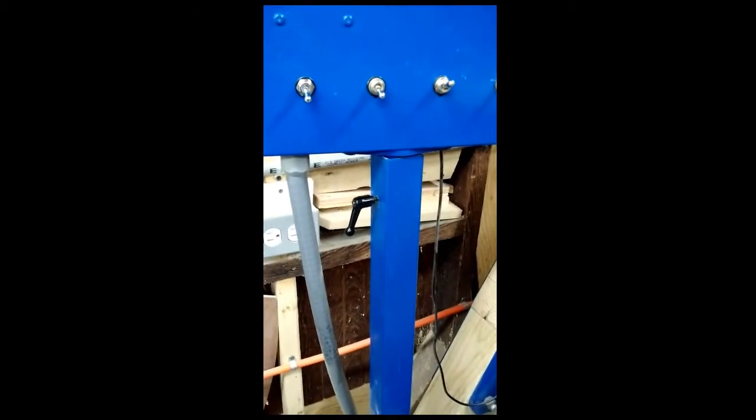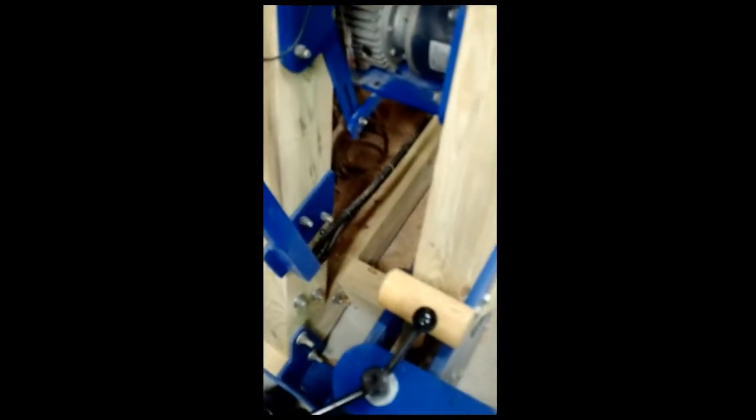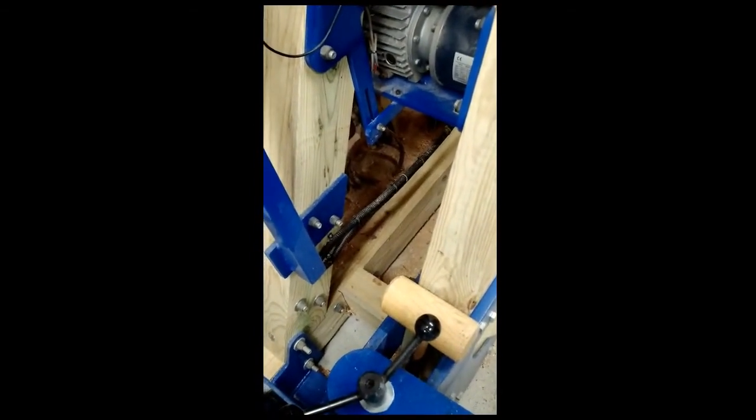The electrical for the machine runs down through that tube and you can see it exiting at the bottom. There are actually two, there you go, two covers there.